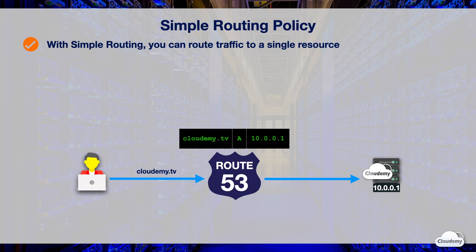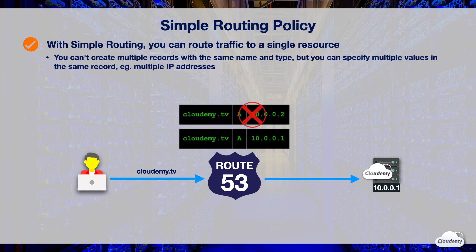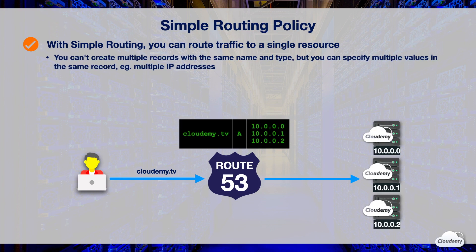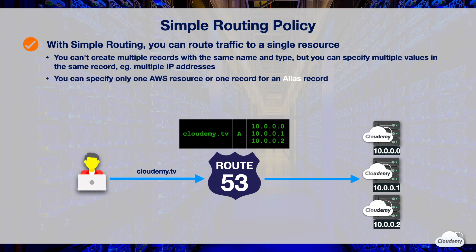If you choose the simple routing policy, you cannot create multiple records that have the same name and type. However, you can specify multiple values in the same record, such as multiple IP addresses. If you choose simple routing for an alias record, you can only specify one AWS resource or one record in the current hosted zone. If you specify multiple values in a record, Route 53 sends all values in random order back to the DNS resolver.